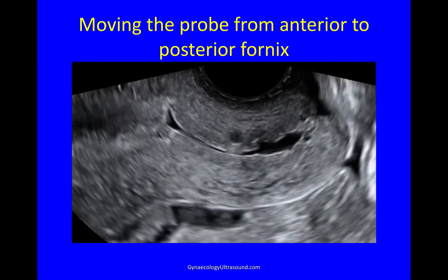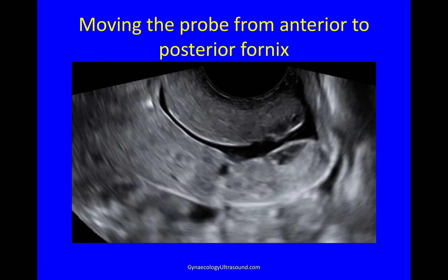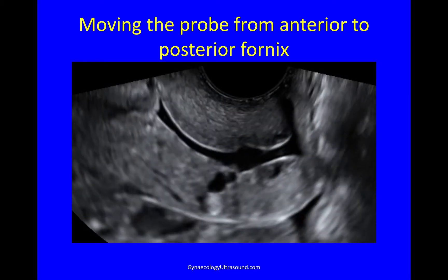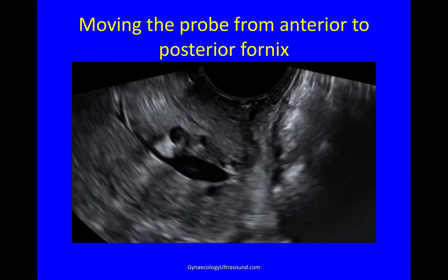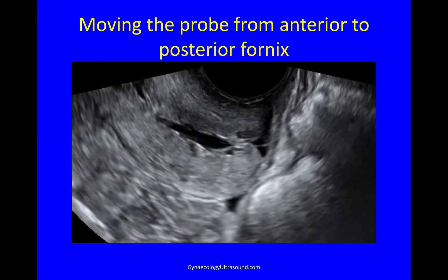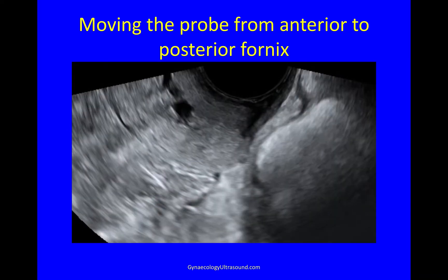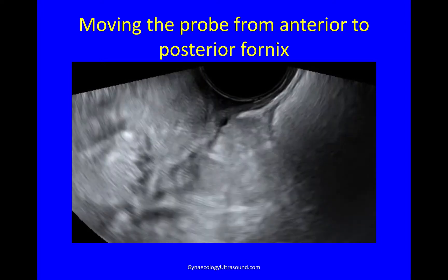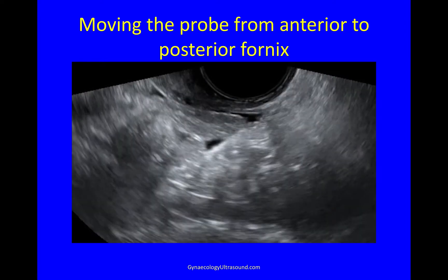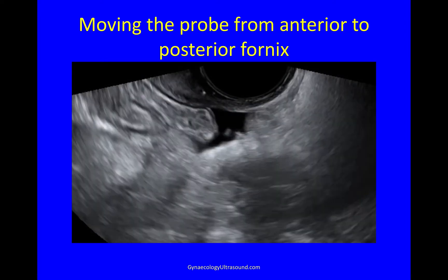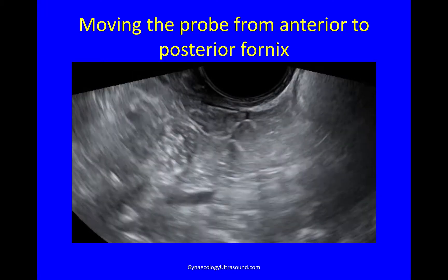There is the cervix in the longitudinal plane. I'm going to pull the probe out a little bit, then angle it more backwards toward the sacrum, and very gently nudge the cervix out of the way, stretching the posterior vaginal fornix over the tip of the probe. And now I can see the pouch of Douglas really clearly.